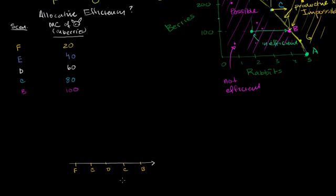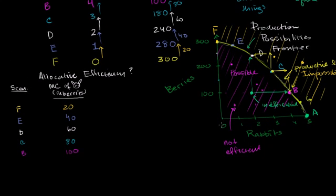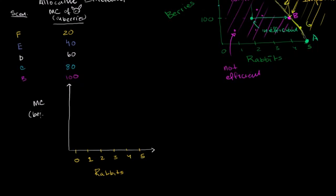Actually, instead of labeling by scenario, let me talk about it in terms of the number of rabbits we have. So the horizontal axis is the number of rabbits caught on average each day: zero, one, two, three, four, and five. On the vertical axis, I want to put the marginal cost in berries. It ranges from 20 up to 100, so let's mark 20, 40, 60, 80, and 100.